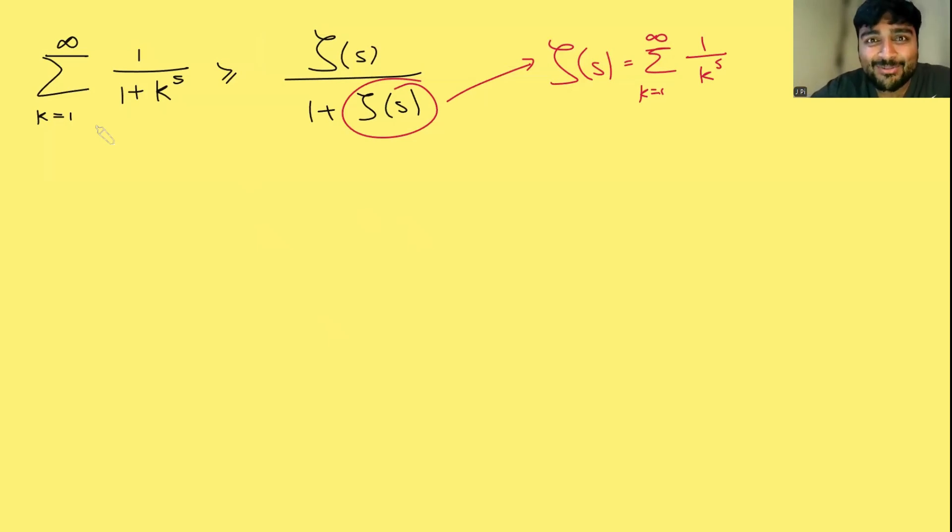This is the closest I'll ever get to solving the Riemann hypothesis. We want to prove that the sum from k equals 1 to infinity of 1 divided by 1 plus k to the s is at least zeta of s divided by 1 plus zeta of s, where zeta of s is this very famous Riemann zeta function, the sum from k equals 1 to infinity of 1 over k to the s. And I probably should say here s is bigger than 1. It's a real number here, so that this quantity is a real number.